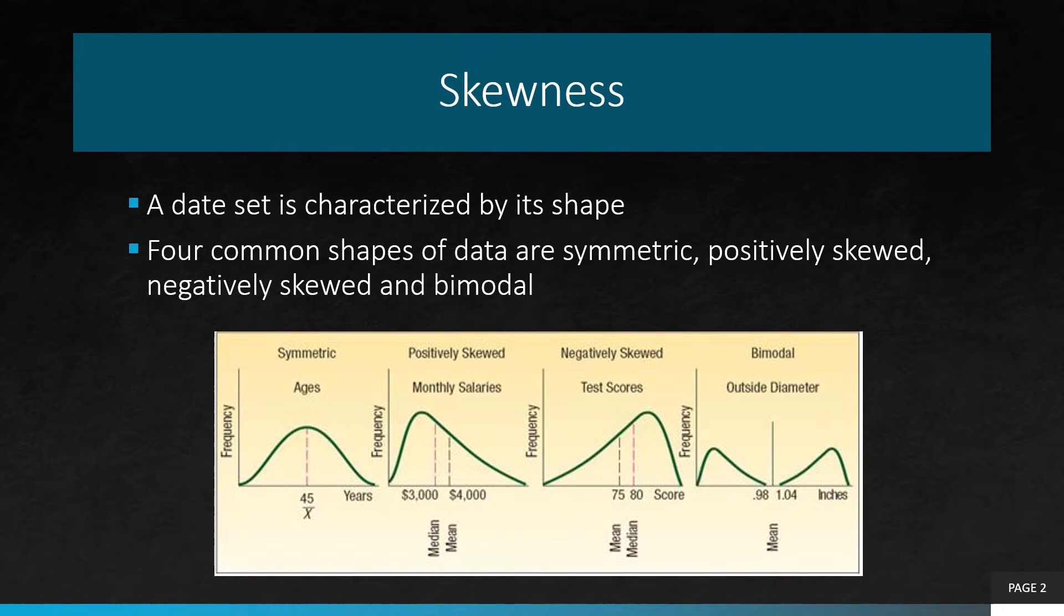In a symmetrical set of observations, the mean and median are equal, and the data values are evenly spread around these values. The data values below the mean and median are a mirror image of those above.